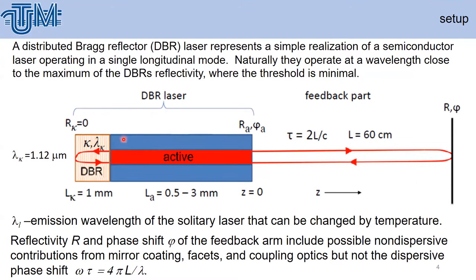Here I show the laser itself — the distributed Bragg reflector is connected with the active region. Such a device operates naturally at wavelengths close to the maximum DBR reflectivity, where the threshold is minimal. We placed a mirror at a distance L of around 60 cm from the front facet of the laser. Lambda_L is the emission wavelength of the solitary laser, phi is the external phase, and R is the reflectivity of the mirror.